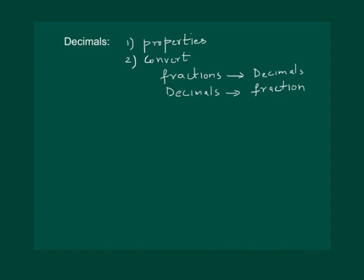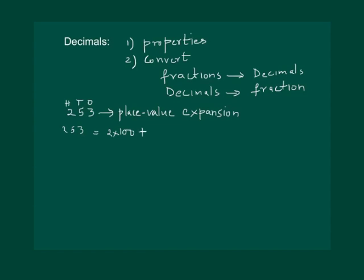Consider a non-decimal number, say 253. We already know that in expanded form this can be written as 2 times 100, plus 5 times 10, plus 3 times 1.